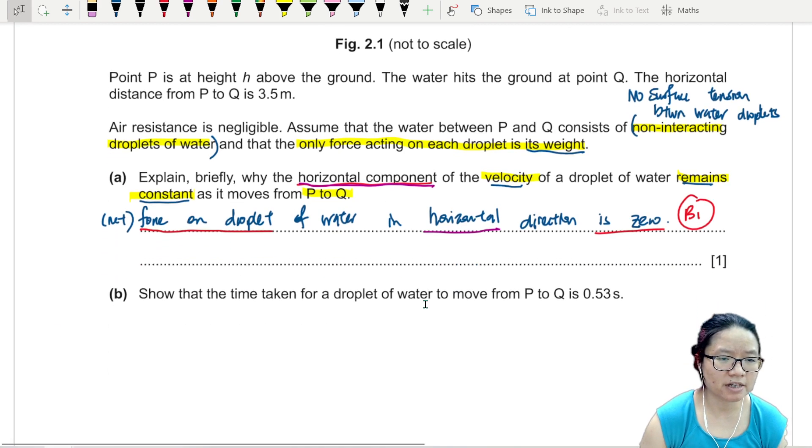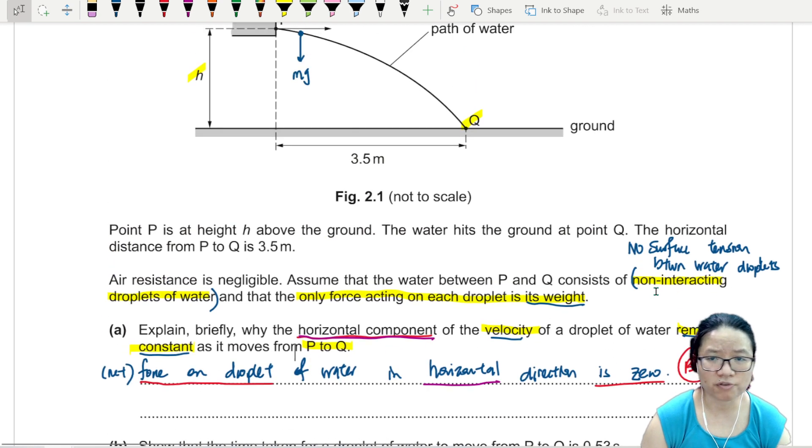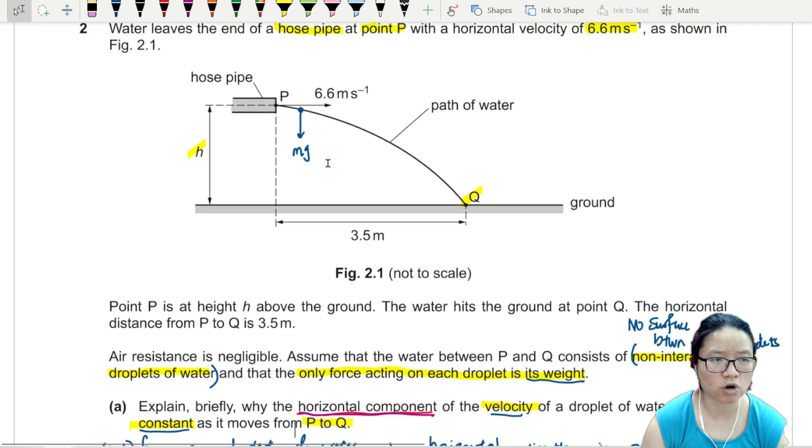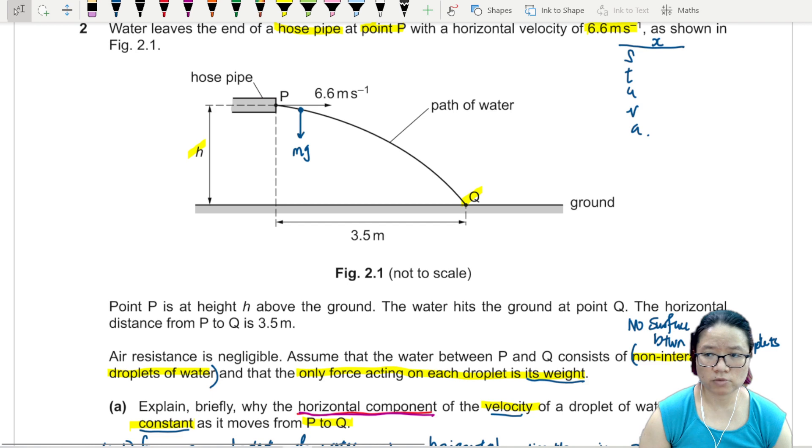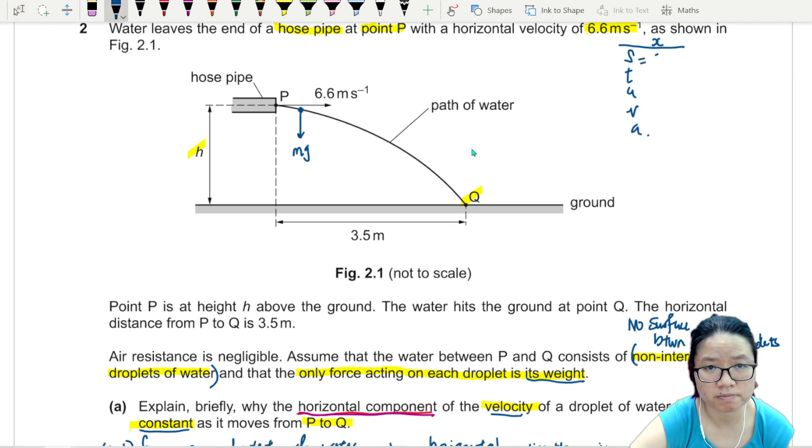Part B. Show that the time taken for the droplet to move from P to Q is 0.53 seconds. So what I'm looking for is the time taken for this droplet to drop from here to here. So I could do SUVAT, but I'm going to do it in the horizontal direction first. So if I look at the horizontal direction, my displacement is 3.5, looking for time, and my initial and final velocity is going to be 6.6.